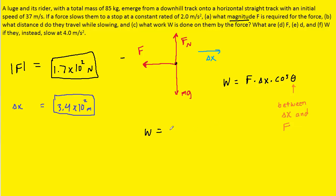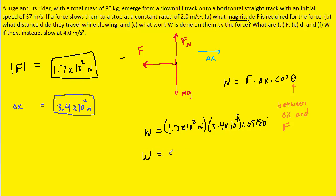We plug in the magnitude of the force, 1.7 times 10 squared Newtons, times the distance of 3.4 times 10 squared meters, multiplied by the cosine of 180 degrees. The cosine of 180 degrees is negative 1, so we'll get a negative answer. Multiplying those two quantities gives us about negative 5.8 times 10 to the power of 4 joules. This is the correct answer to part C.